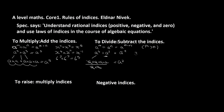Examples: x to the power of 6 divided by x cubed gives us x to the 6 minus 3, which is x cubed. And x to the 9 divided by x cubed gives us x to the power of 6. And 6 to the power of 4 divided by 6 squared gives us 6 squared.